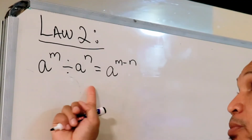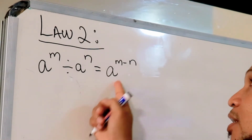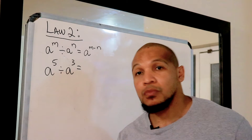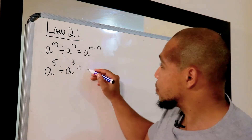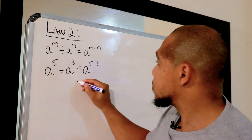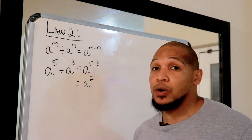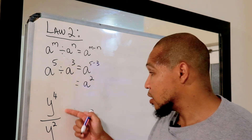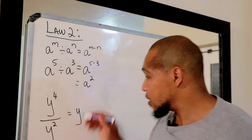Law number two says when we have the same base and we divide, we don't add the exponents but we subtract them. For example, a to the power of five divided by a to the power of three: we write our base, subtract our exponents. We can also write it this way — when we divide, we still have the same base and we still subtract the exponents.